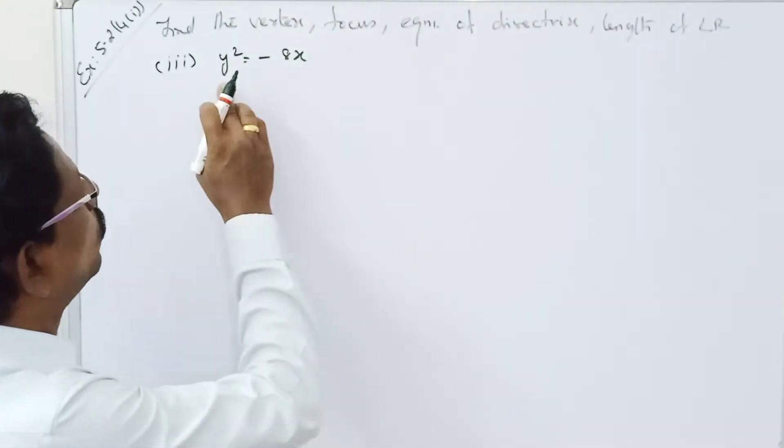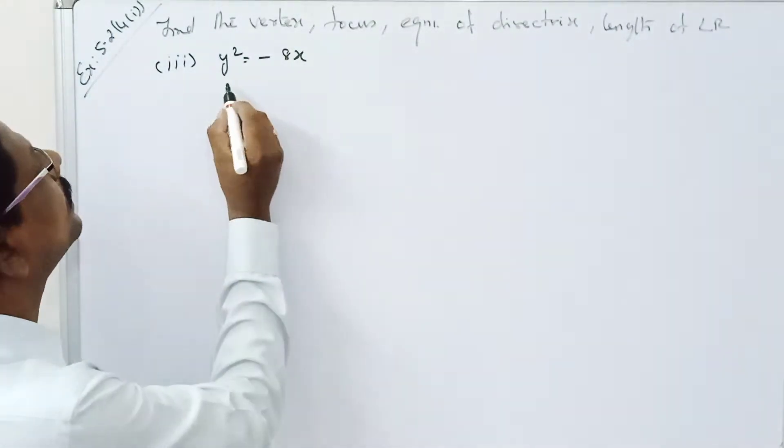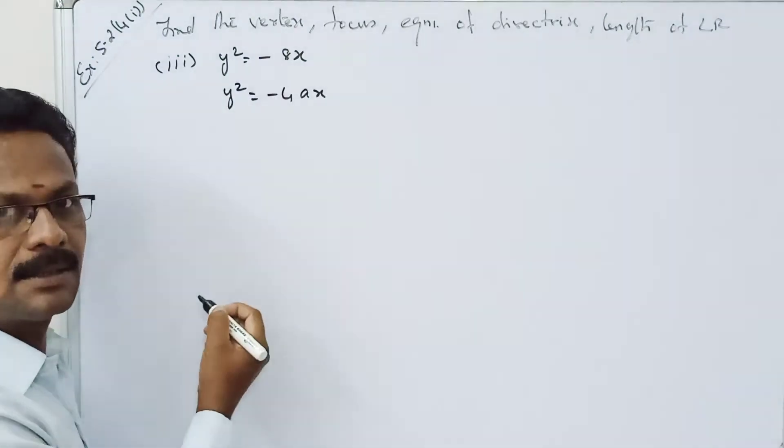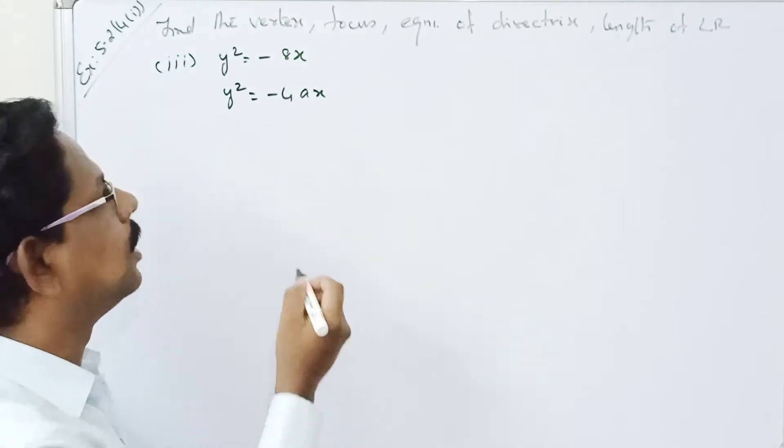Welcome to Magriemers. y square equal to minus 8x. That is, y square equal to minus 4ax is the standard form of the parabola.